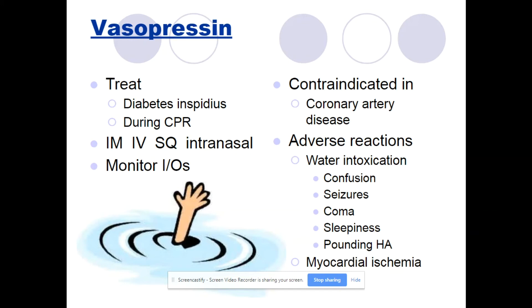Vasopressin, also known as desmopressin, is used to treat diabetes insipidus and is also given during CPR. It can be given IM, IV, sub-Q, or intranasally. Monitor intake and output closely. Contraindicated in coronary artery disease. Adverse reactions include water intoxication — signs and symptoms include confusion, seizures, coma, sleepiness, and pounding headache. It can also cause myocardial ischemia.